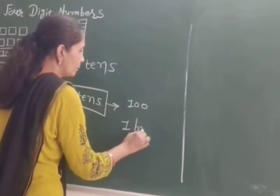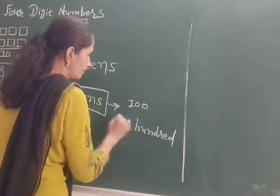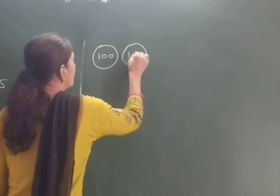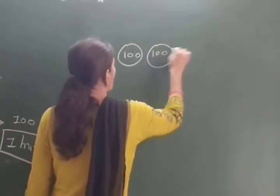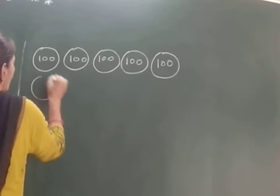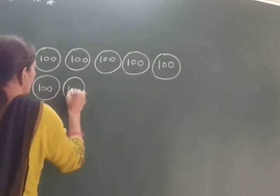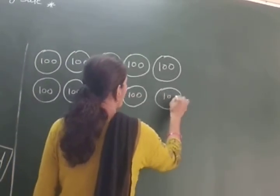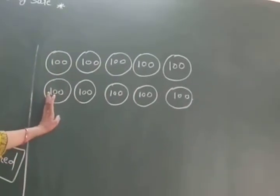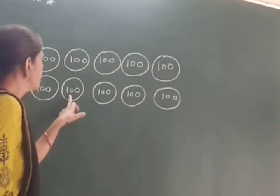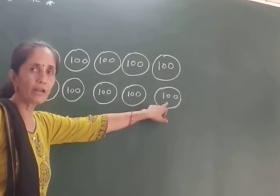This is one hundred. Now we take hundreds. One hundred ten times: one hundred, two hundred, three hundred, four hundred, five hundred, six hundred, seven hundred, eight hundred, nine hundred, and ten hundreds.